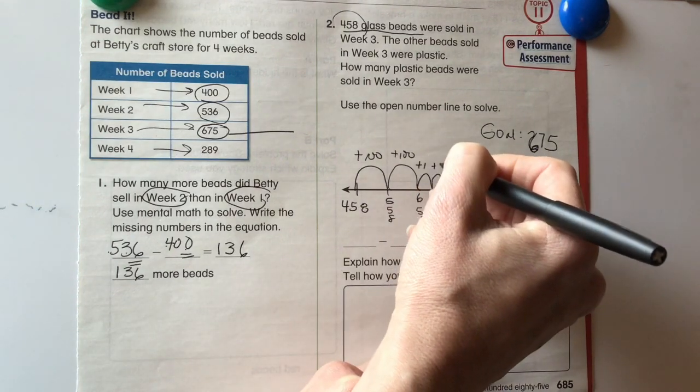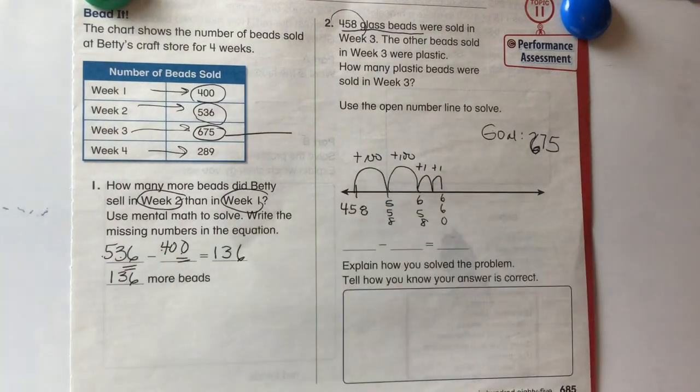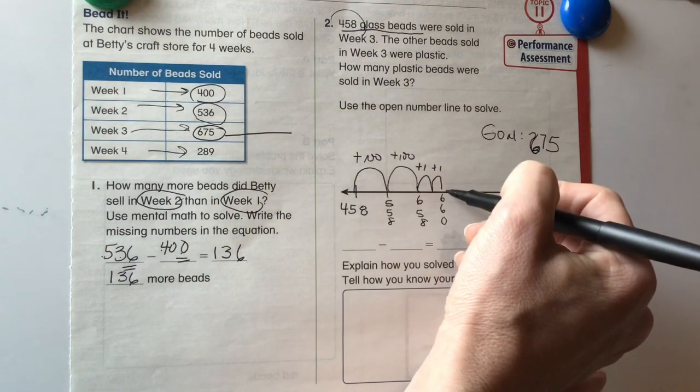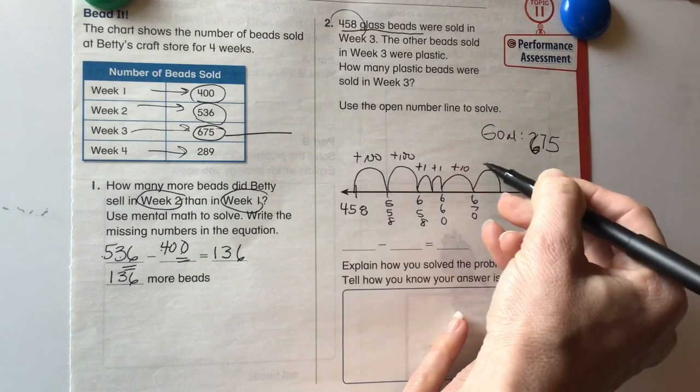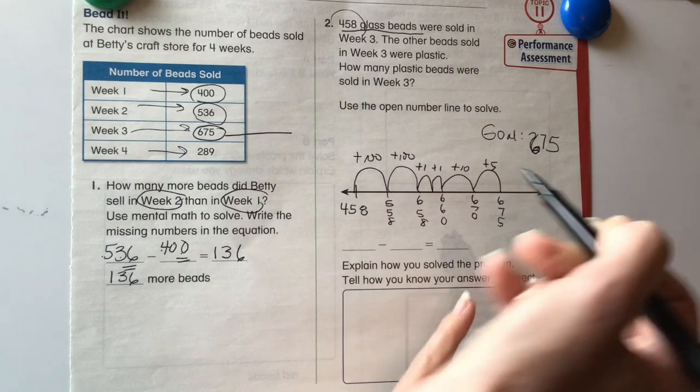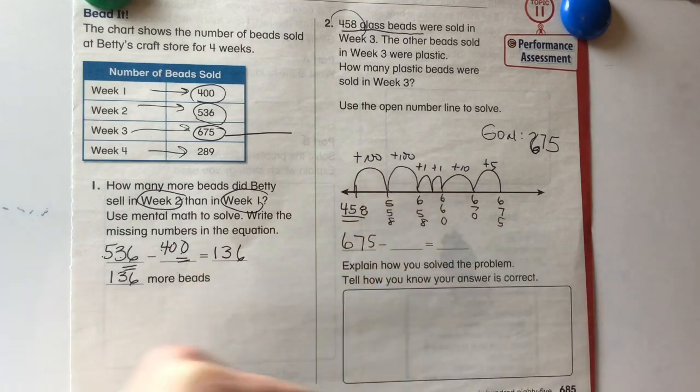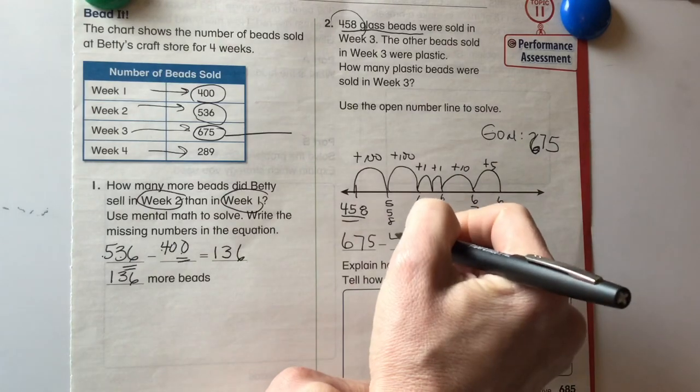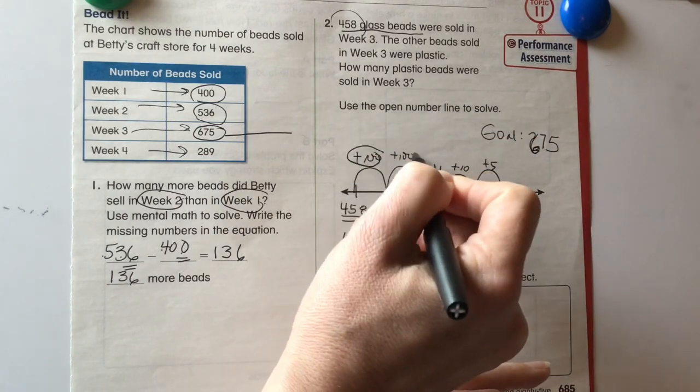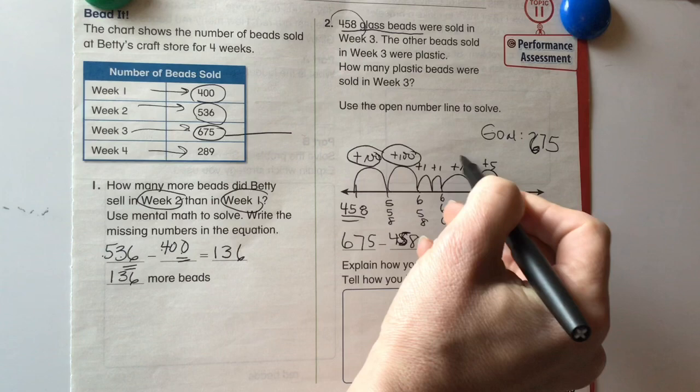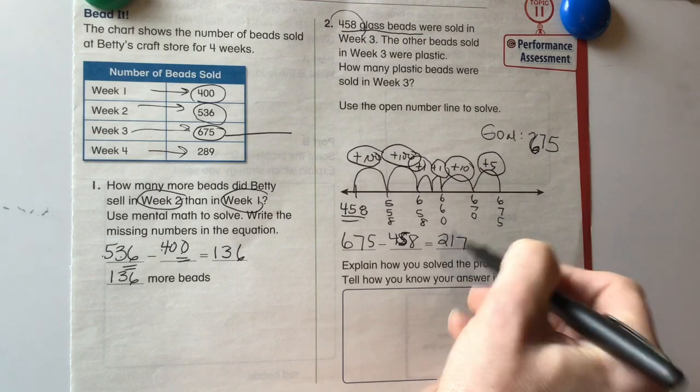Now, I can't do another hop of 100 because that'd be at 758. And I'm just trying to get to 675. So I'm going to do two small hops here. Plus one, plus one, to get me to 660. Okay? Now, my goal is 675. So from 660, I can do a hop of 10 plus 10 puts me at 670. And then a hop of plus 5 puts me at 675. So what I want to know is my total is 675 minus 458. Now, we're going to do our hops here. 100, 200, 210, 215, 216, 217.